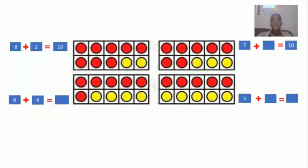Next we have 6 plus 4. 6 plus 4, we have 6 red dots and 4 yellow dots, which will equal the number 10. Very good, boys and girls.